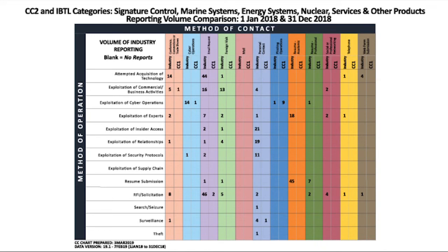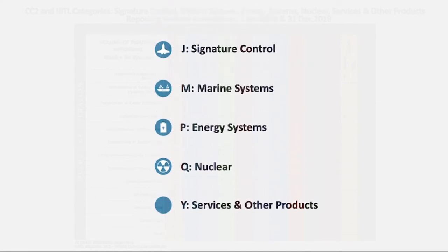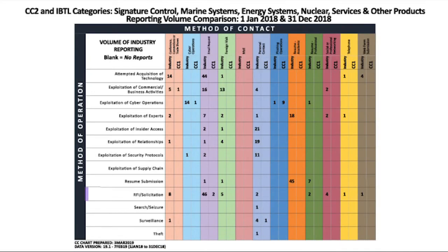A similar matrix can be scoped at a narrower scale. This example encompasses SCRs from four facilities of a cleared company — a total of 14 SCRs — narrowed to the five IBTL categories the company self-identified: signature control, marine systems, energy systems, nuclear, and services and other products. For the method of operation RFI solicitation via email request, there were 46 SCRs from cleared industry regarding those five IBTL categories, and the company had reported two email RFI solicitation SCRs to DSS.